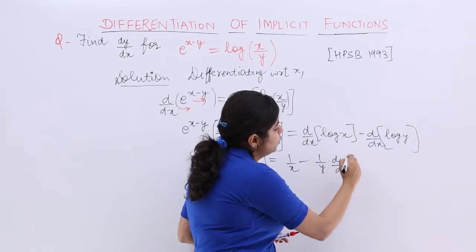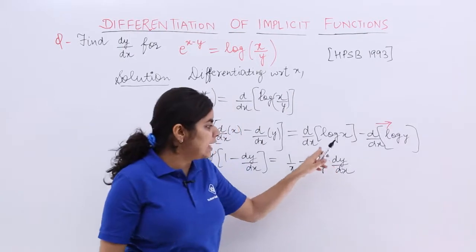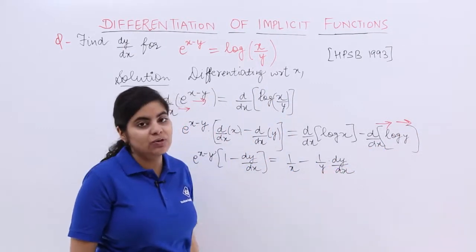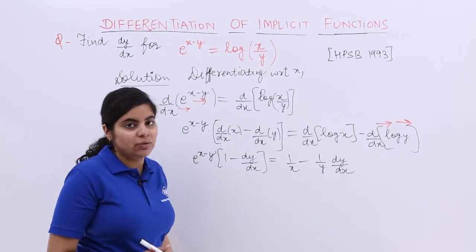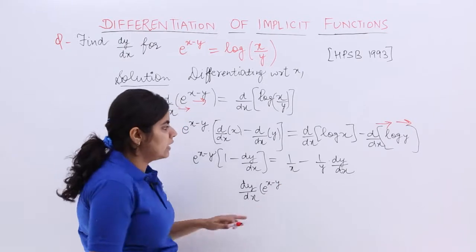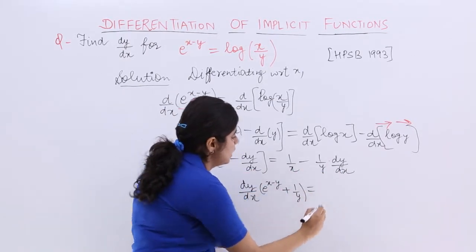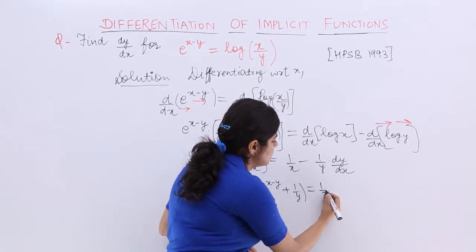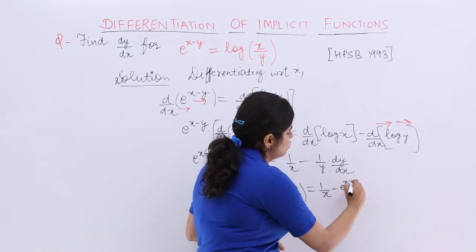And then dy/dx is appended. The differentiation of log y gave 1 by y, but since it is y and not x, we also differentiate with respect to x, giving the dy/dx factor. Wherever dy/dx appears, we take it out as common. So it becomes: dy/dx times e raised to the power x minus y, plus 1 by y, equals 1 by x. Then e raised to the power x minus y is moved, giving minus e raised to the power x minus y.